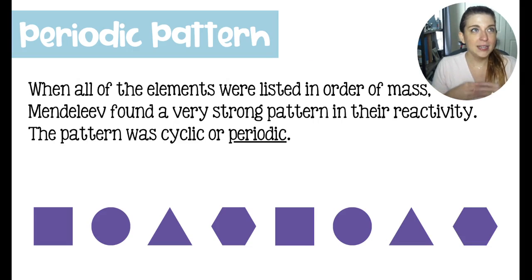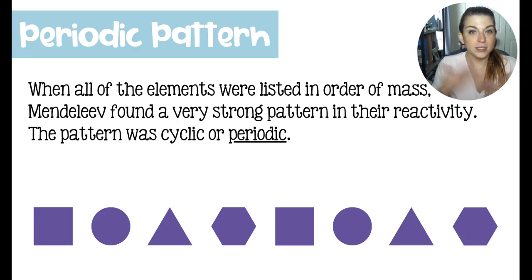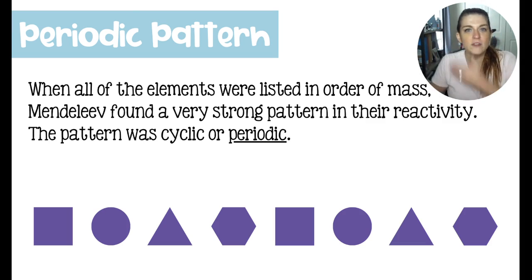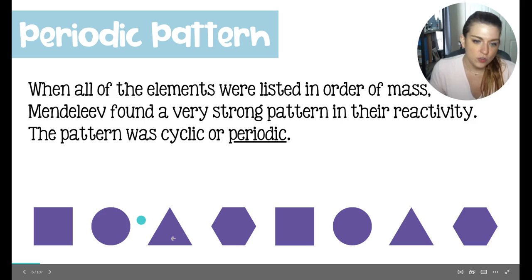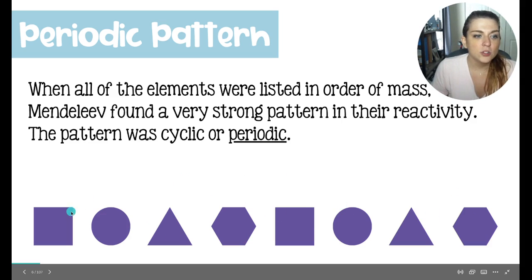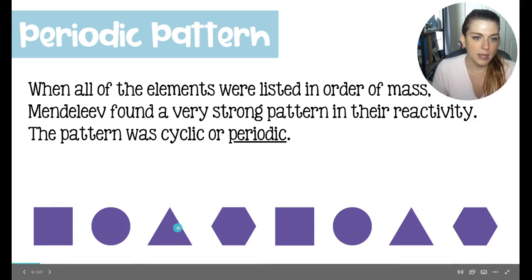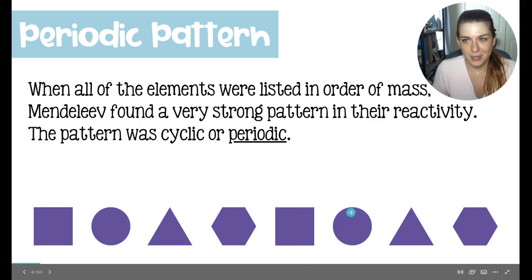When he did that, he found a pattern to their reactivity — it was cyclical, or periodic. It just stopped and then started again, kind of like the phases of the moon, repeating over and over. He saw: super reactive with water, makes a strong base, silver shiny metal, poison — then: reacts with water, silver shiny metal — and it went in the same pattern over and over again.